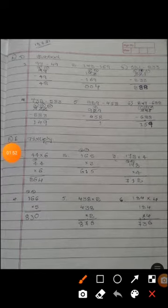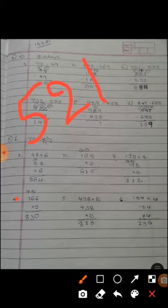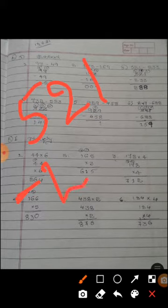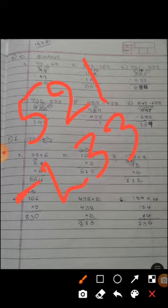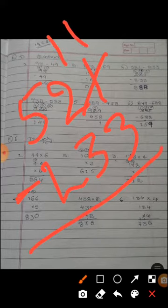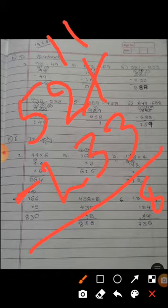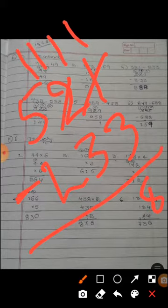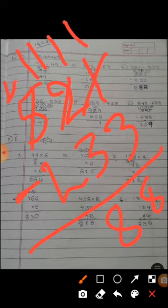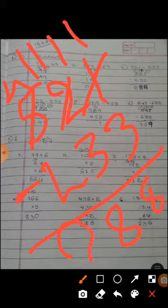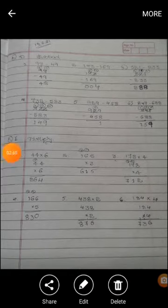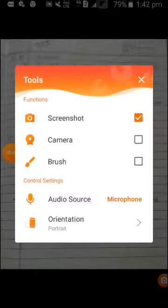Third one, 521 minus 233. 1 will not go for 3. It can be taken as 11. 11 minus 3 it become 8. 2 will not go for 3. It also has taken as a borrow it become also 11. 11 minus 3 it become 8. The 5 become taken borrow it become a 4. 4 minus 2 it become 2. The answer is 288. Third one finished.